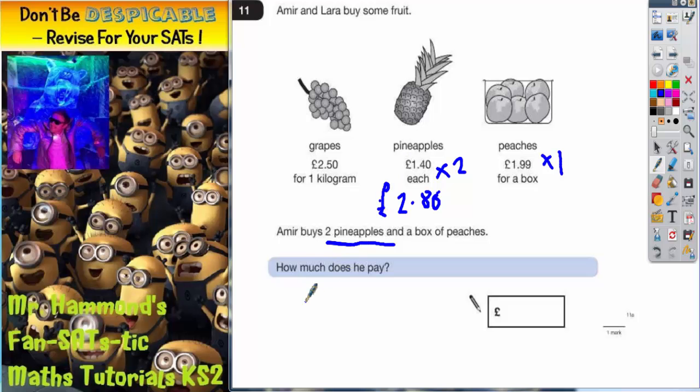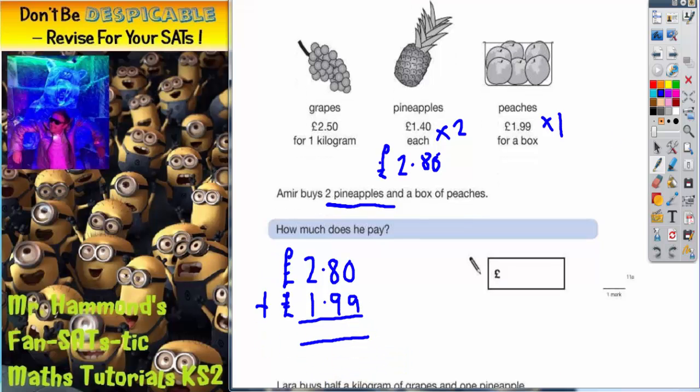So pineapples is going to be £2.80. We've got two of them and we've got a box of peaches so we want to be adding on the £1.99. And once you've added that on we'll get the final answer. So 0 add 9 is 9. 8 and 9 is 17. Put your 7 in carrying a 1. 2 plus 1 is 3. Plus that one I've carried is 4. So the final answer to part 1 should be £4.79. Pound sign is already in the answer box for you. So you just need to put your £4.79 in.